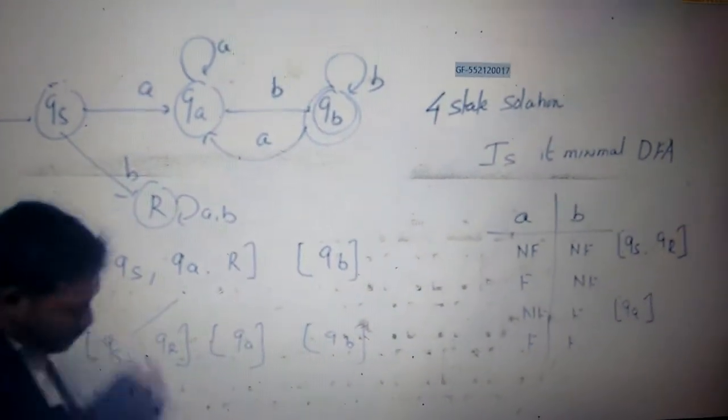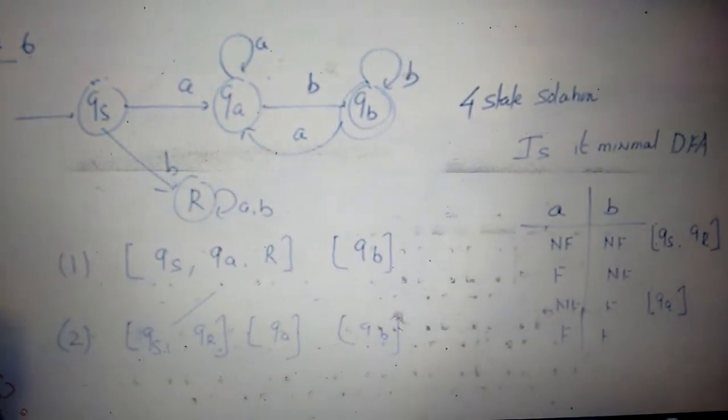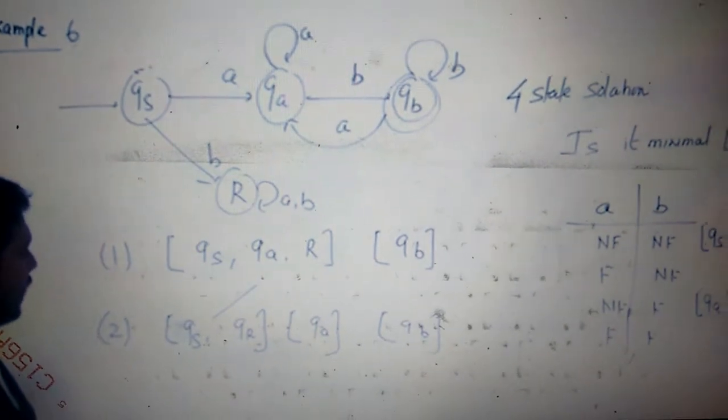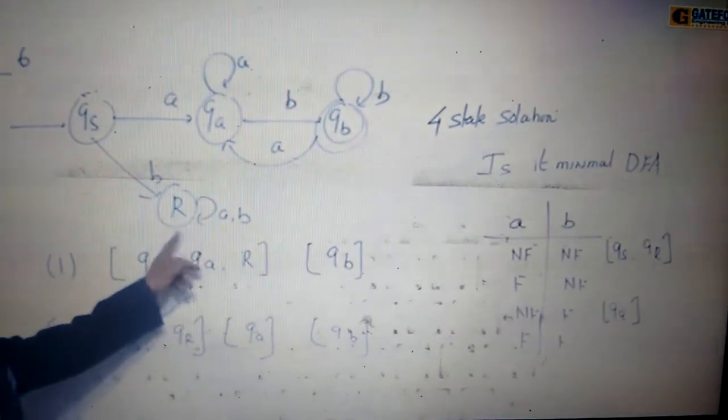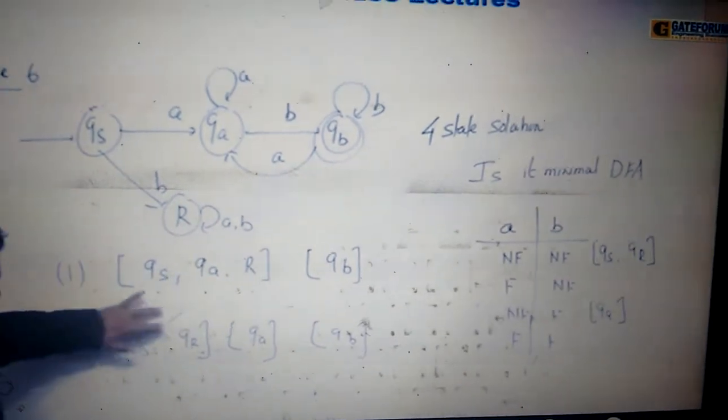We are going to a same partition. So QS on input A is going to QA, but QR on input A is making a self-loop. The behavior looks like this.